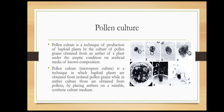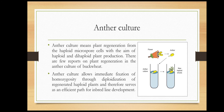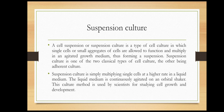The next type is anther culture. Anther culture means plant regeneration from the haploid microspore cells with the aim of haploid and dihaploid plant production. There are few reports on plant regeneration in the anther culture of buckwheat. Anther culture allows immediate fixation of homozygosity through diploidization of regenerated haploid plants and therefore serves as an efficient method for inbred line production.